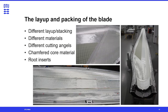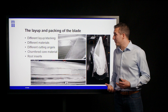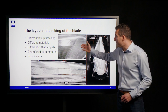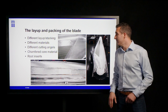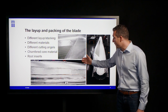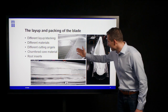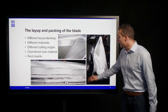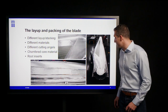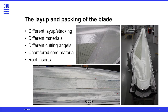Once the mold has been approved, the layup and packing of the blade components can start. We must consider the ply and stacking sequences of the different layers, cutting angles, chambering of the core material, and the placement of root inserts. Once we have carefully considered all packing of the blade mold, it is ready for the next step.